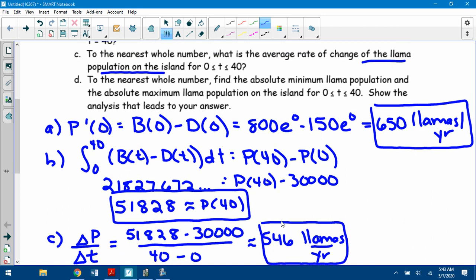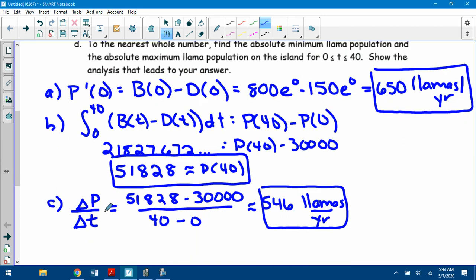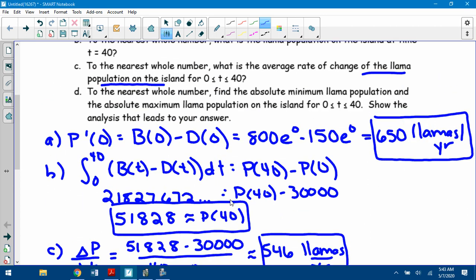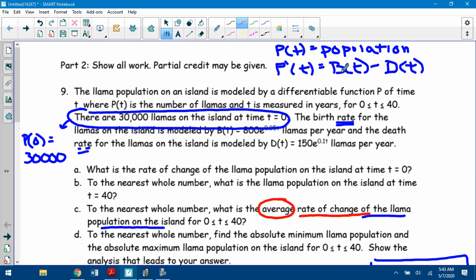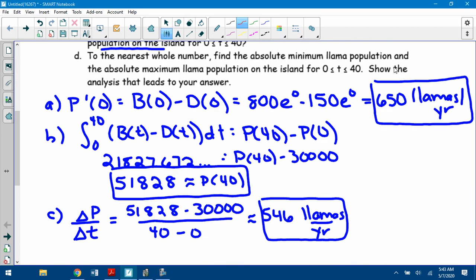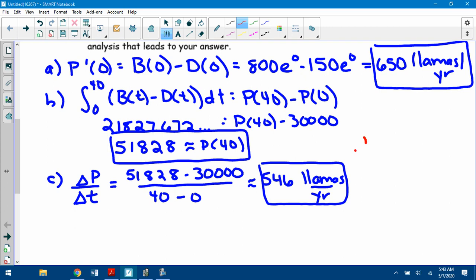Okay, now I said there's two ways to do C. The average rate of change of population means slope of population. You can do it that way. The other way is average of the rate of change. I also do know equations for the rate of change. The rate of change is B(t) minus D(t). So you could do the 1 over b minus a, so 1 over 40 in this case, 40 minus 0, times the integral from 0 to 40 of the rate of change, which is B(t) minus D(t), dt.